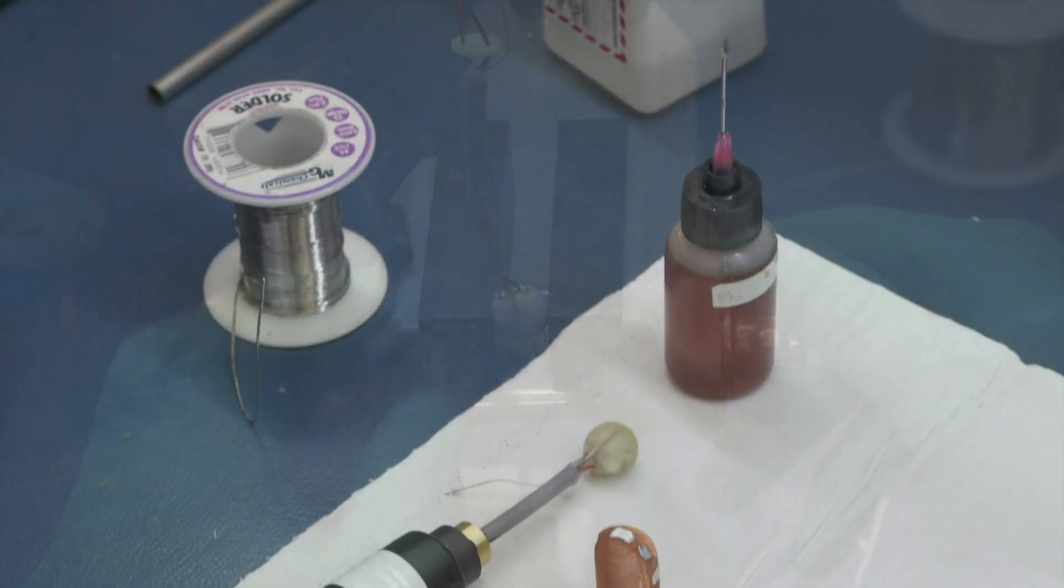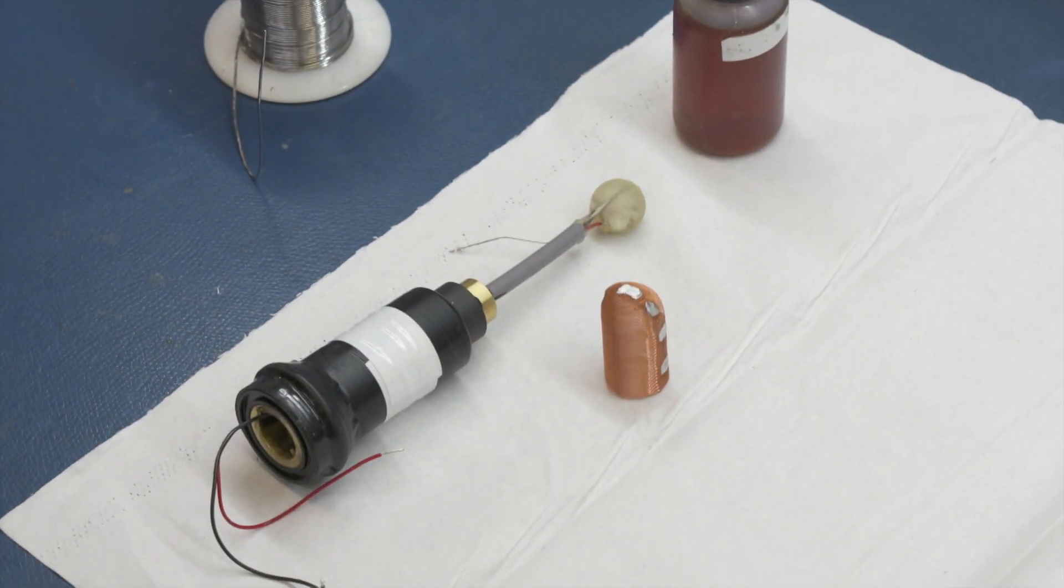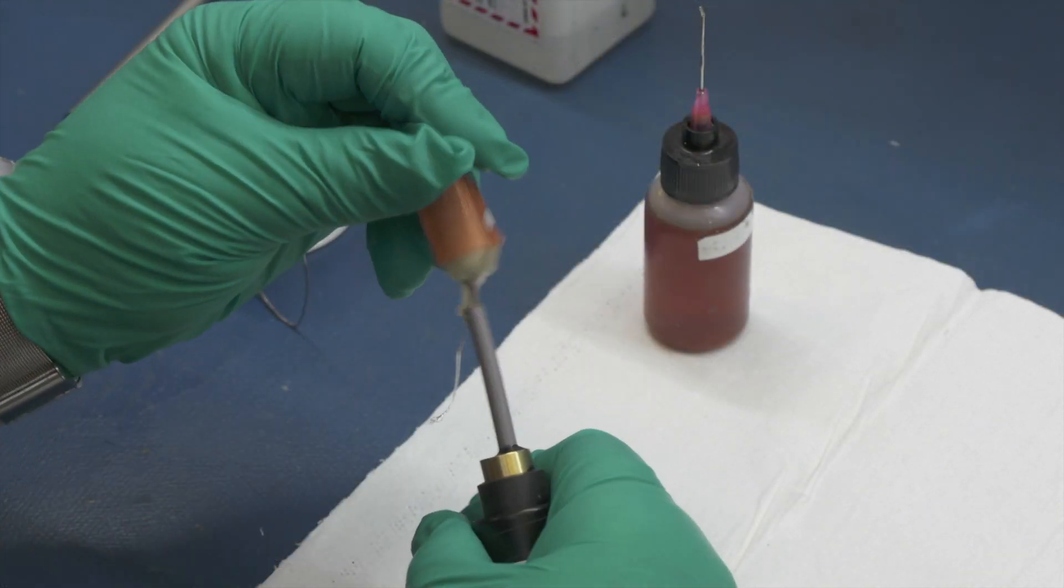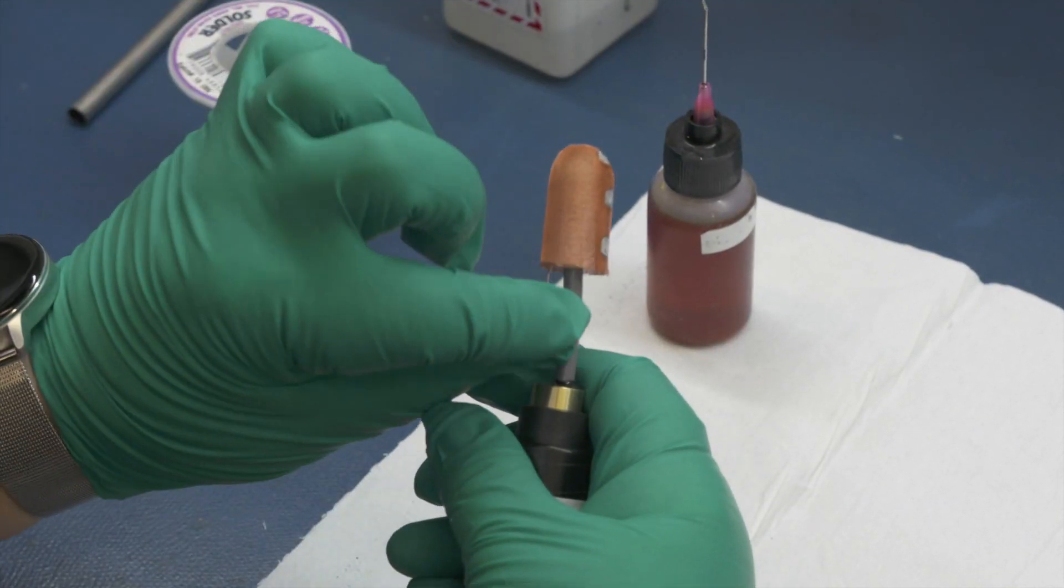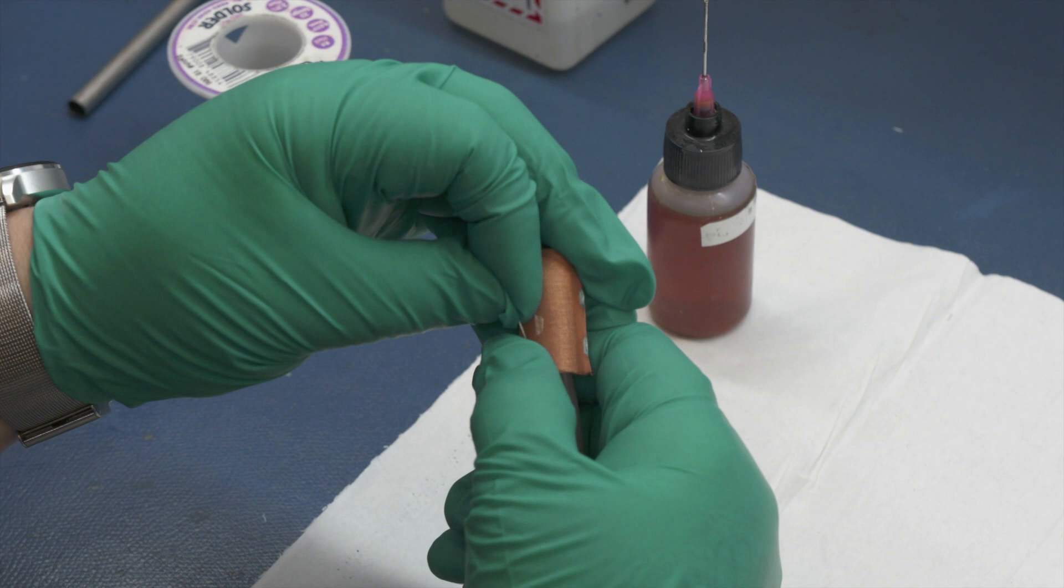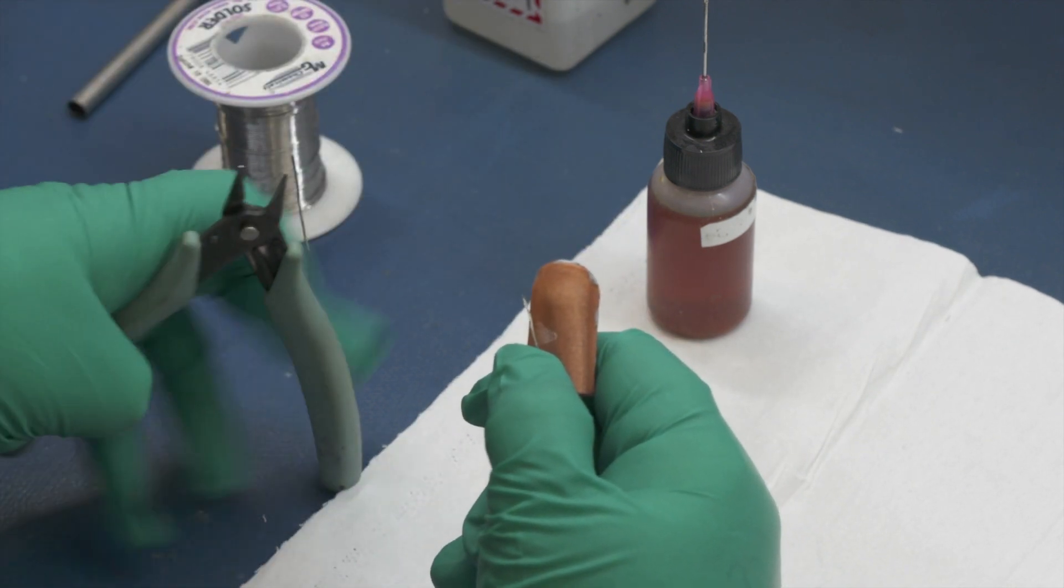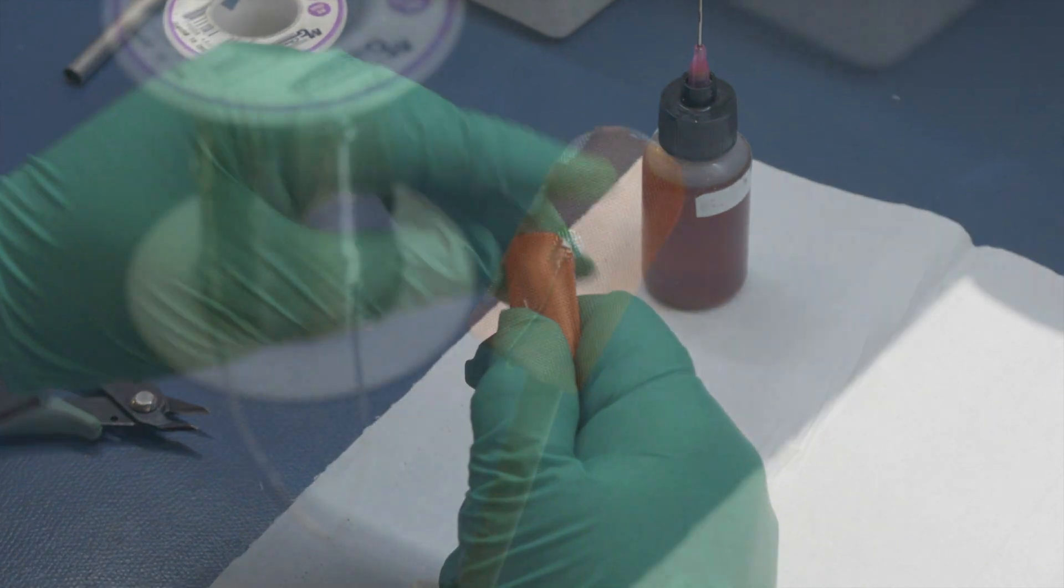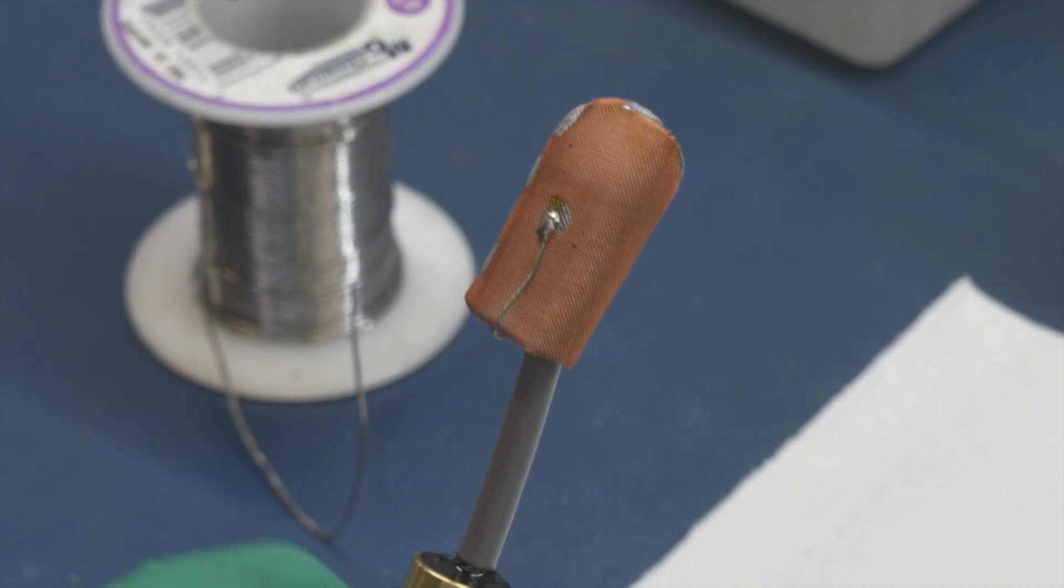With part of the hydrophone case now installed, the assembly is easier to handle. Here, a copper shield is attached to the cable harness. The copper shield minimizes the pickup of electrical signals from the environment that could interfere with the hydrophone signal. A connecting wire is soldered in place.